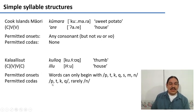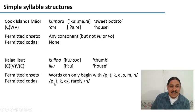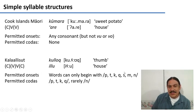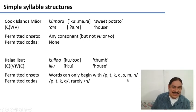Likewise, the codas can be P, T, K, or Q, but no others. You cannot have a word in Kalaallisut end with the sound S or M, for example.